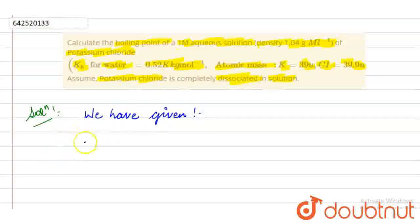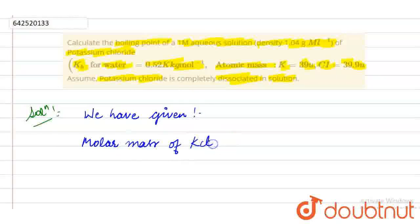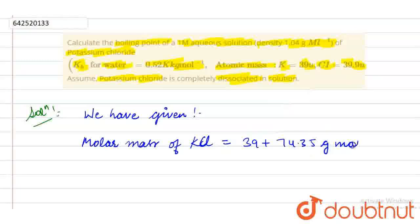The molar mass of KCl is equal to 39 plus 35.5, which is 74.5 g per mole. As KCl dissociates completely, the number of ions produced are 2.